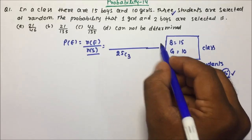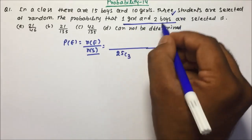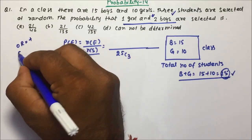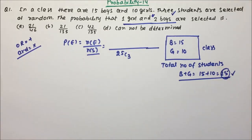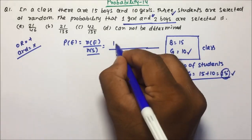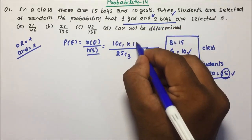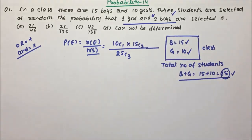Now, in your favor, what do you want? The probability that 1 girl and 2 boys are selected. If AND is there, we have to multiply; if OR is there, we have to add. You want 1 girl and 2 boys. So if you want a girl, select from the girls: 10C1. AND means multiplication. You want 2 boys, so you select from the boys: 15C2, because there are total 15 boys.